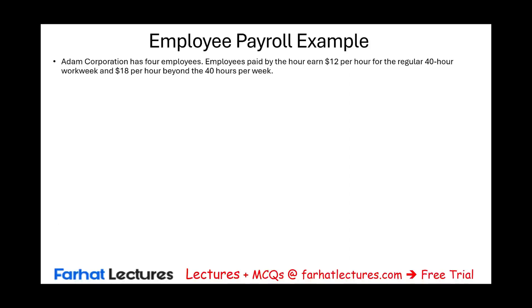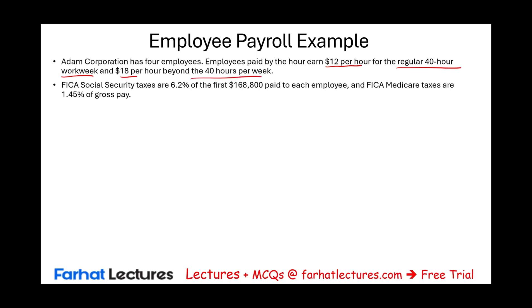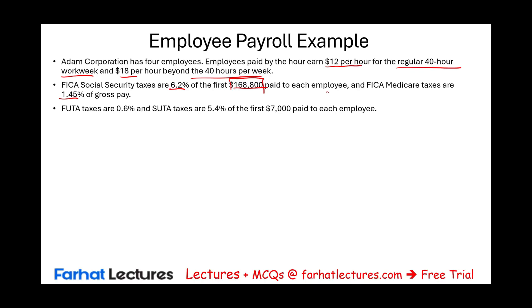Let's dive into this comprehensive problem. Adam Corporation has four employees. Employees paid by the hour earn $12 per hour for a regular 40-hour work week and $18 overtime for over 40 hours. FICA Social Security is 6.2% of the first $168,800 — this is the limit per employee. FICA Medicare is 1.45% with no limit. FUTA taxes are 0.6% (the net federal rate), and SUTA taxes are 5.4% of the first $7,000 paid to each employee.